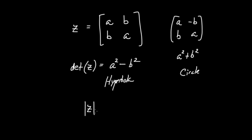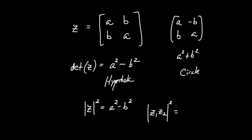What this allows us to do is define the squared length as precisely the determinant of that matrix. In the complex numbers, A squared plus B squared is the squared length of a complex number. For split complex numbers, we define the squared magnitude as A squared minus B squared. You may ask why define length in that strange way — and the reason is that if you have two split complex numbers Z1 and Z2, the squared magnitude of their product equals the product of the squared magnitudes of each individually, which is exactly analogous to what happens with complex numbers.